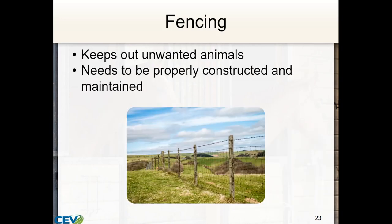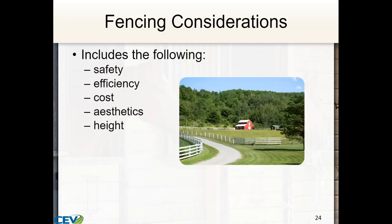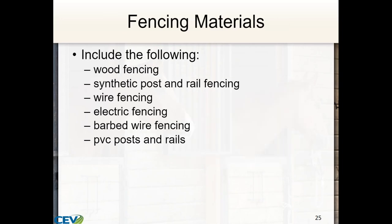Fencing is perhaps the next most important part — it keeps out unwanted animals, and in order to do so, fences must be properly constructed and maintained. Considerations with fencing include safety, efficiency, cost, aesthetics, and height. Materials you can build a fence from include wood fencing, synthetic post and rail fencing, wire fencing, electric fencing, barbed wire fencing, and PVC posts and rails.